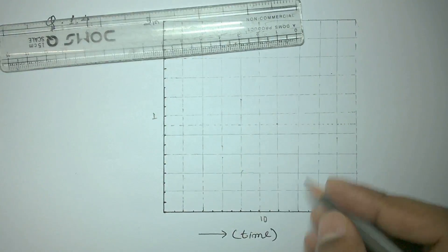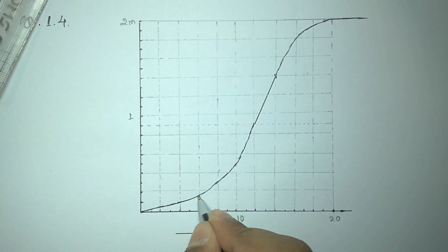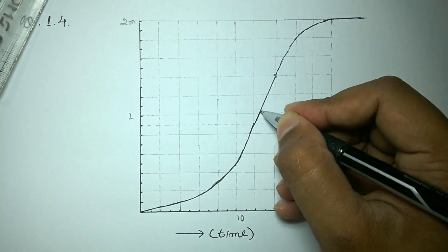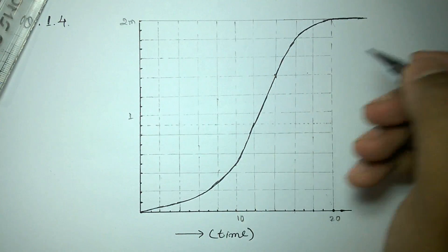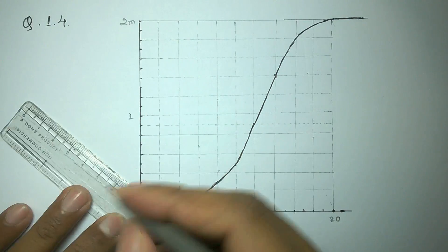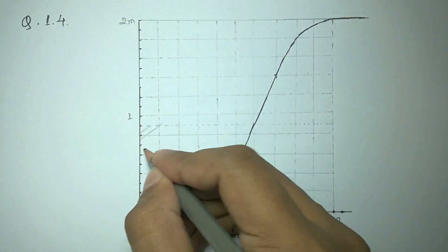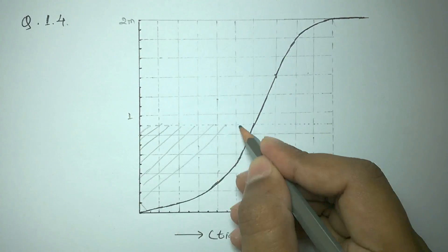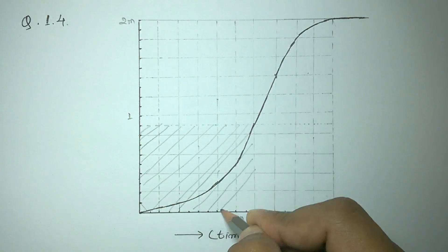This is the position time graph. As we can see there are three parts of the graph. These three parts can be shaded for convenience. The first part is under which the particle is accelerating.